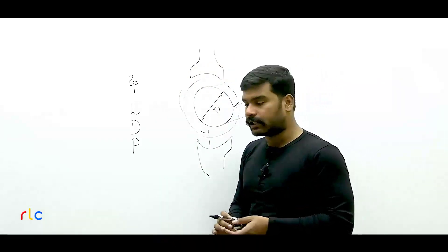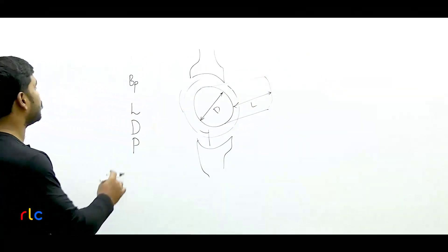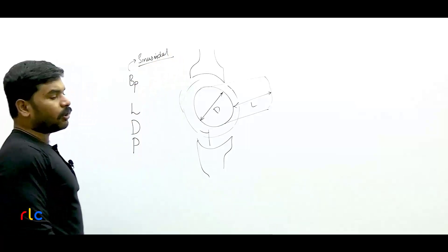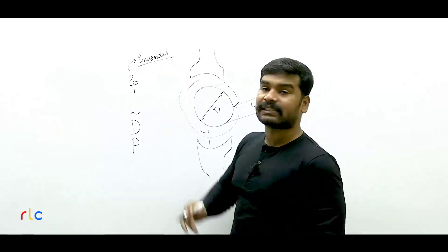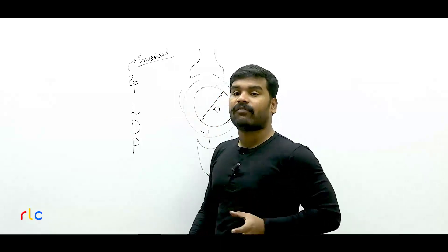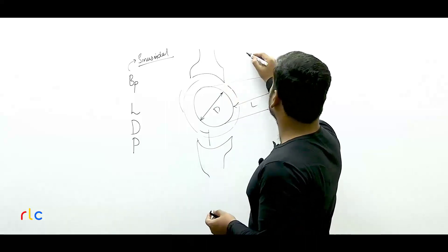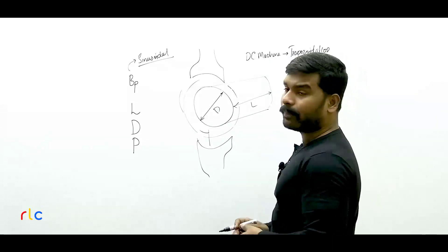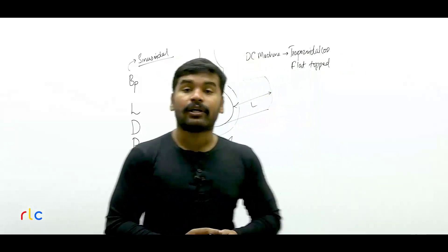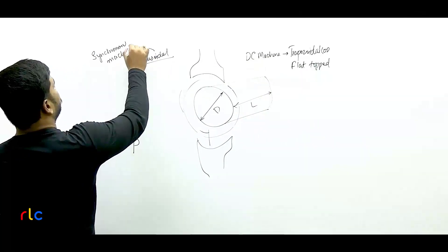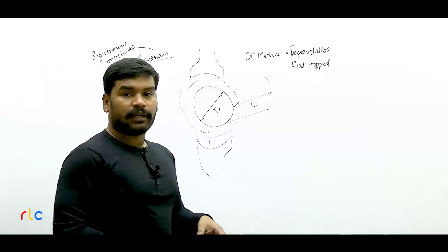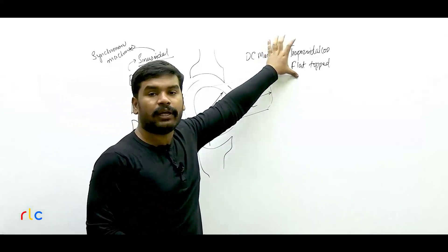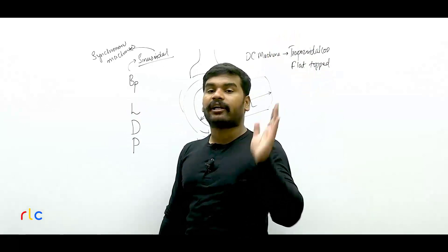One point to note: in the question, the waveform of the flux density is stated to be sinusoidal. But wait — is the flux density waveform in a DC machine actually sinusoidal? Absolutely not. In a DC machine, the flux density is a flat-top or trapezoidal waveform. Sinusoidal flux density is found in synchronous machines or alternators. Sometimes the examiner will ask you to assume that a DC machine has a sinusoidal flux density, but in reality the DC machine flux density waveform is purely trapezoidal or flat-top.